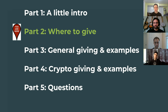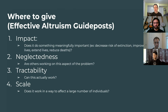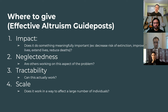Part two: where to give. For many EAs on this call these aren't foreign ideas, but for others: what will matter more than how you give and how much you give is where you give. That by far has the largest impact, so it's important to think about it.